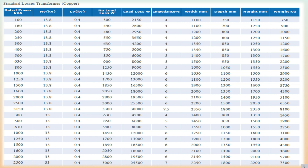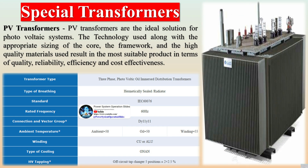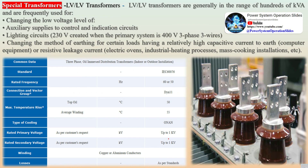Permissible Tolerances: Manufacturing tolerances are the deviations between the measured values and the guaranteed values. Unless otherwise specified in the order, the tolerances are limited to the values specified in IEC 60076-1. Frequency is the number of occurrences of a repeating event per unit of time, also referred to as temporal frequency. The period is the duration of one cycle in a repeating event, so the period is the reciprocal of the frequency. The frequency at which the transformer is designed to operate is 50 Hz or 60 Hz, set in accordance with the network frequency.